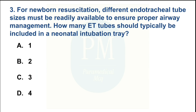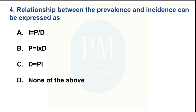For newborn resuscitation, different endotracheal tube sizes must be readily available to ensure proper airway management. The relationship between the prevalence and incidence can be expressed as: Option A: I = P/D. Option B: P = I × D. Option C: D = P/I. Option D: none of the above. The correct option is Option B — P = I × D.